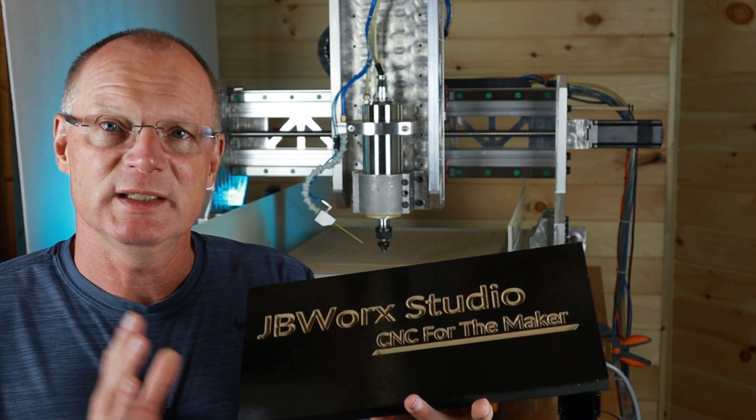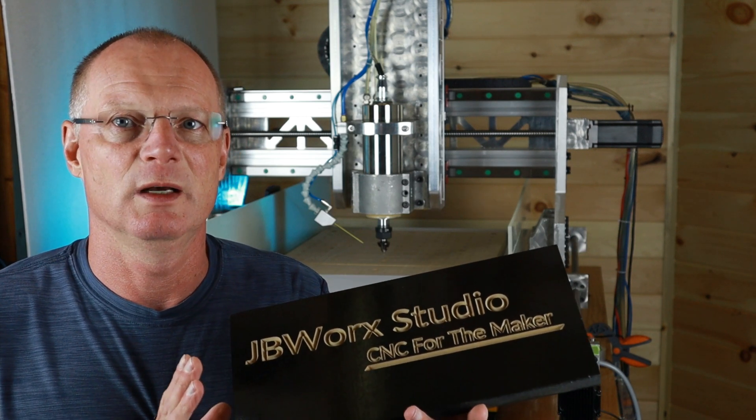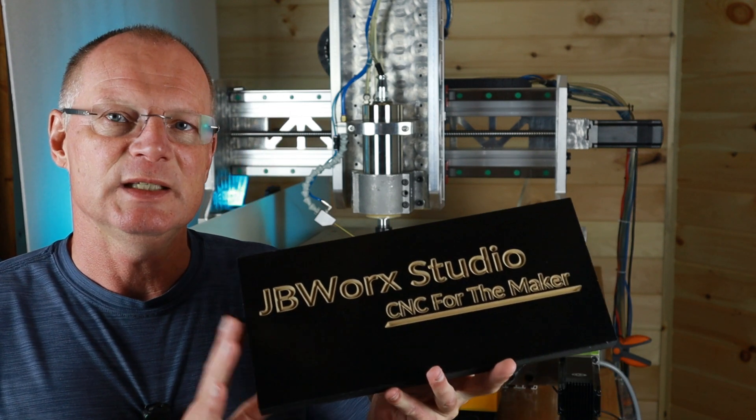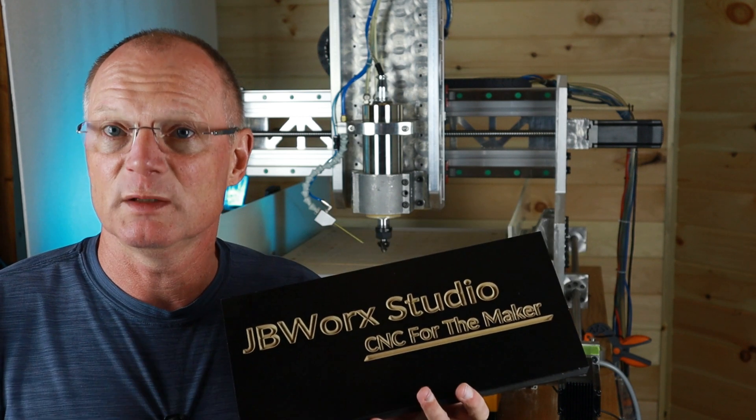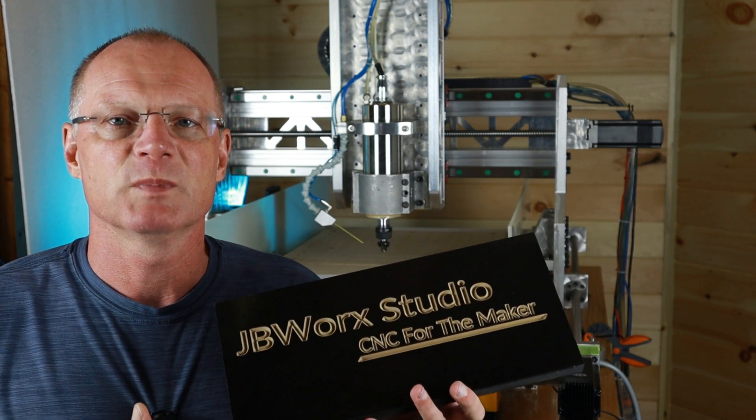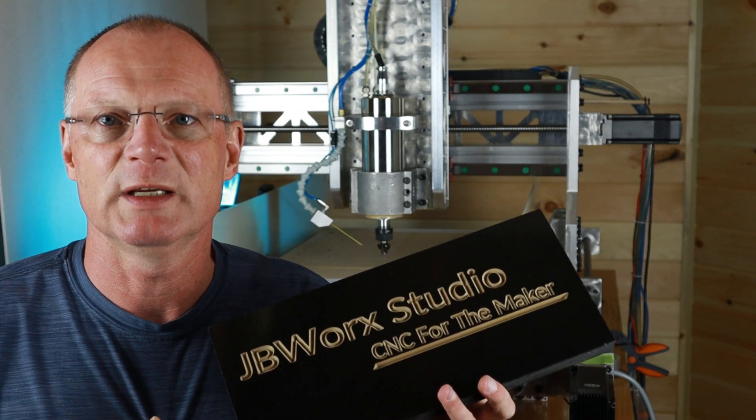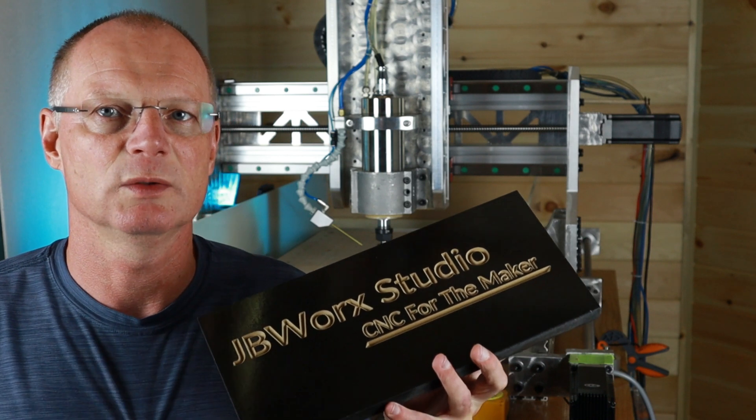A 60-degree v-bit is going to be your best friend when you start out. There are different types of bits—I'll come back to that in a moment. This I first painted, then selected the font and carved it as a v-carve using the Vectric V-Carve software, which you can do in V-Carve Desktop and also V-Carve Pro.